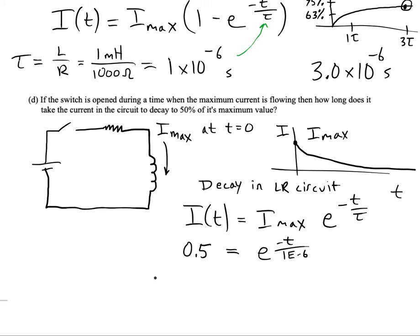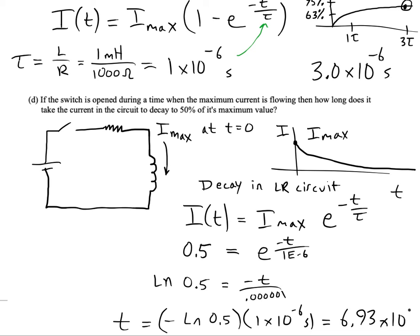We'll take the ln of both sides. When we do that, the e goes away. And we'll solve. We'll get t equals negative ln 0.5 times 1 times 10 to the minus 6. I'm getting 6.93 times 10 to the minus 7 seconds.